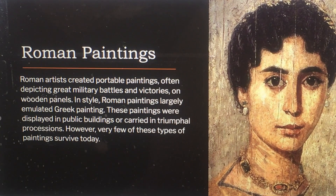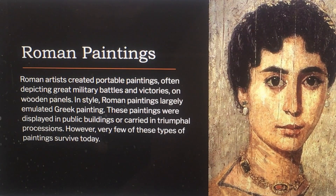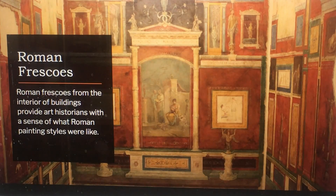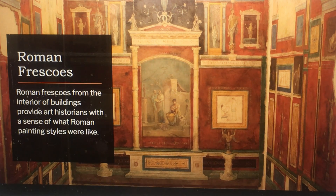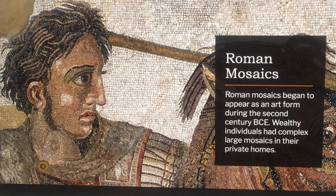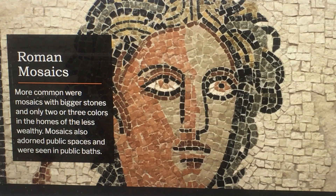Roman artists created portable paintings often depicting great military battles and victories on wooden panels, largely emulating Greek painting in style. These paintings were displayed in public buildings or carried in triumphal processions, though very few survive today. Roman frescoes from building interiors give art historians a sense of Roman painting styles, and mosaics began to appear as an art form during the second century BCE. Wealthy individuals had complex large mosaics in their private homes, while more common were simpler mosaics with bigger stones in only two or three colors. Mosaics also adorned public spaces and public baths.